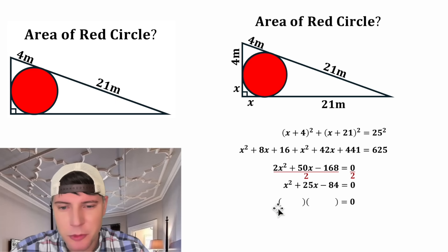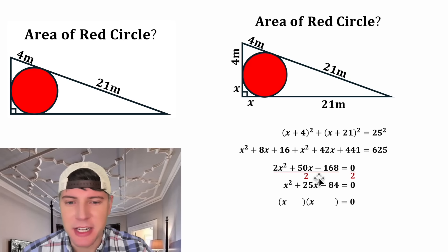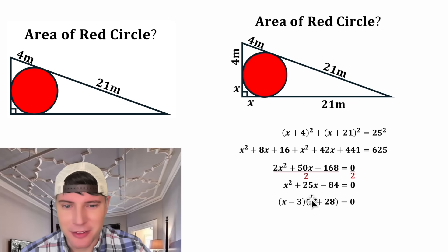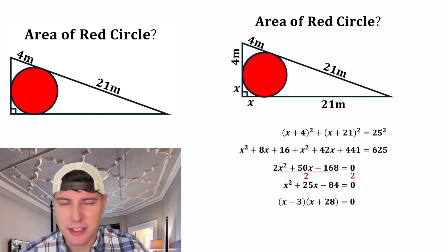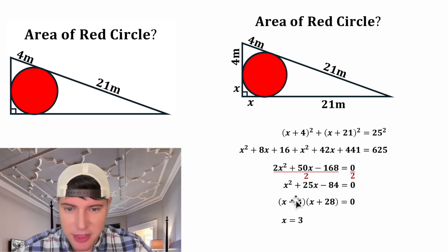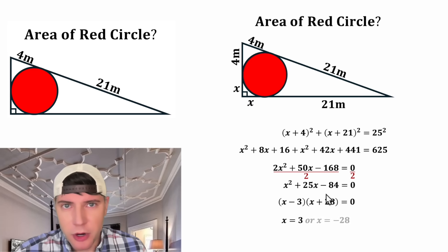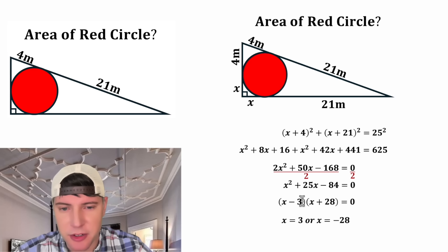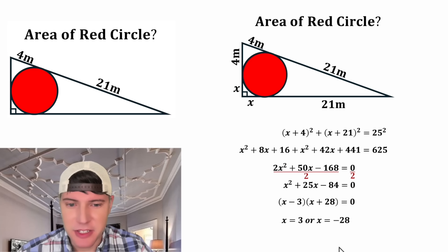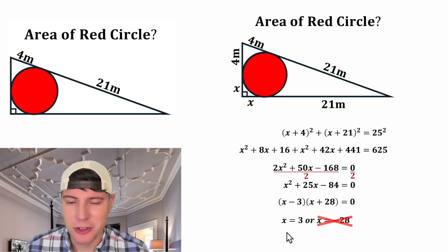Now we can factor this. We need two numbers that add to 25 and multiply to −84 — that's −3 and +28. So we get (x − 3)(x + 28) = 0. That means x = 3 or x = −28. Since x is a positive distance, x can't be −28, so x equals three.